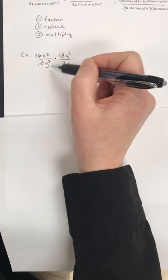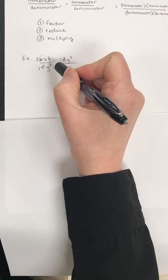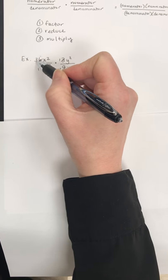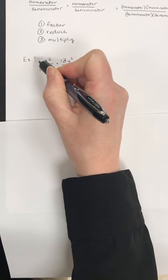But I'm also allowed, when I'm multiplying, to reduce on the diagonals. If I have x squared, let me do the numbers first. If I have 3 on the numerator, 3 on the denominator, those actually cross off to just 1.